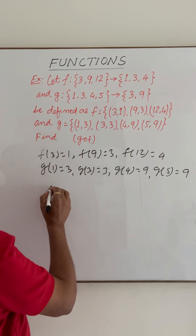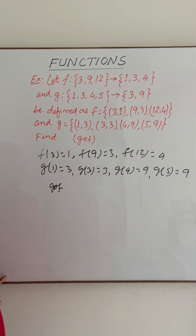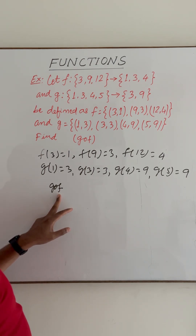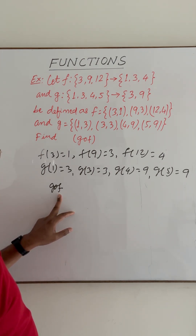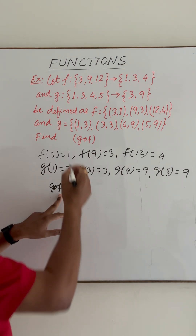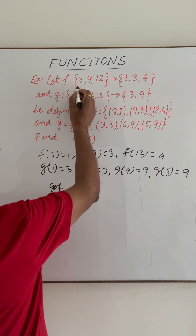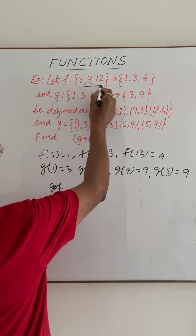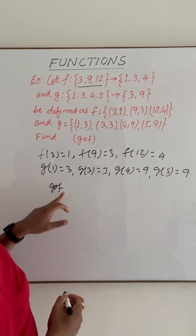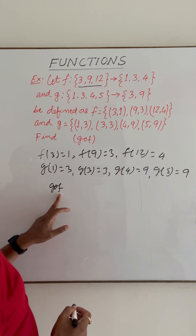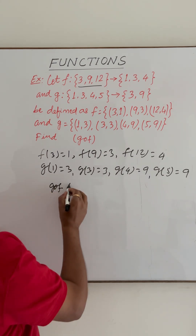We have to find the value of g operation f. We know that the domain of g∘f is equal to the domain of f, and the domain of f has elements 3, 9, and 12. So we have to find the values of g∘f(3), g∘f(9), and g∘f(12).